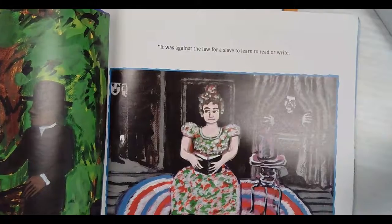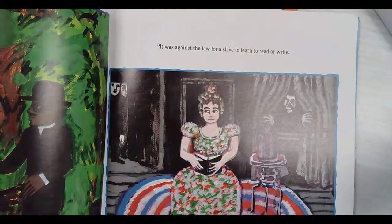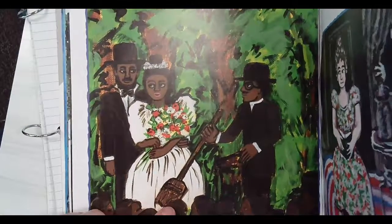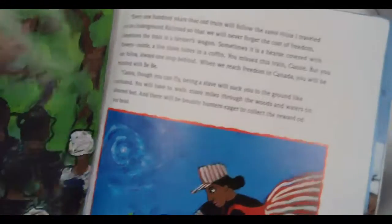I think sometimes these kinds of books give you the best. It says it was against the law for a slave to learn to read or write. Here's the one we talked about the other day, Jumping the Broom. This gives you a different spin on an informational book.